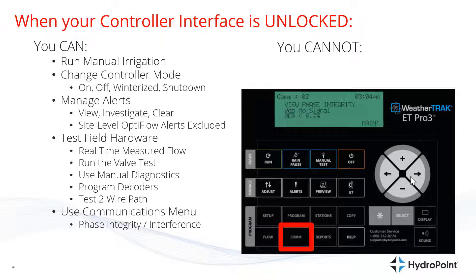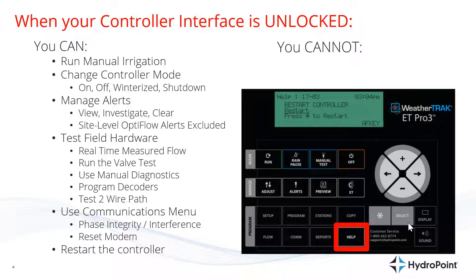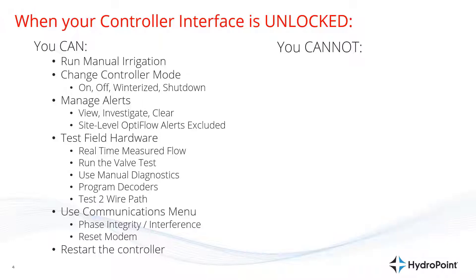You can see your numbers for phase integrity and interference, and you can reset the modem, which is helpful when your controller is offline. You also have the ability to restart the controller if you need to make an emergency reset. There are many troubleshooting tools available when you unlock that panel.